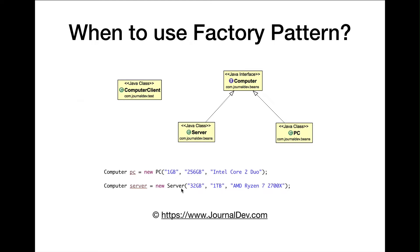This approach has certain problems. First, the code is very tightly coupled. If you change your PC constructor and add another argument, the client class also has to change — that's not a good practice. Another drawback is there is no abstraction: the client is aware of all instances such as Server and PC, and is also responsible for creating them. So the client has to do a lot of work to get these objects.